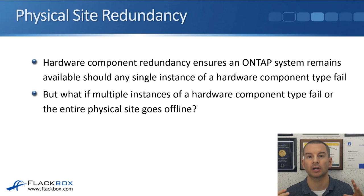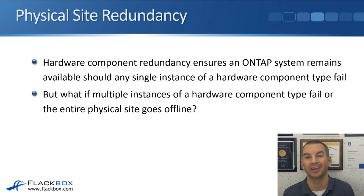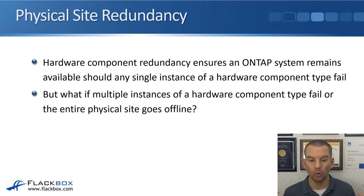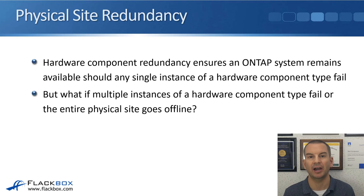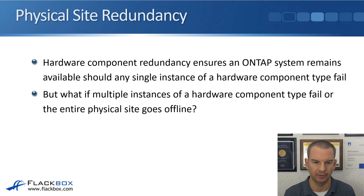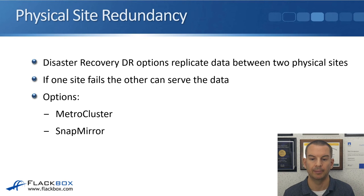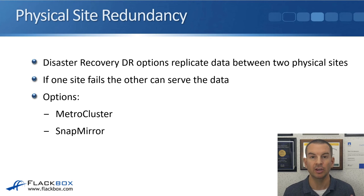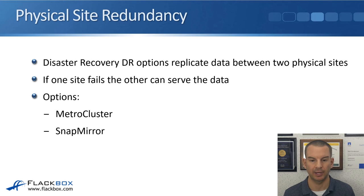Those were the hardware redundancies that protect against a single point of failure. Hardware component redundancy ensures that an ONTAP system remains available should any single instance of a hardware component type fail. But what if multiple instances of a hardware component type fail, or — somewhat more likely — the entire physical site goes offline because of a flood, fire, or complete electrical failure? We have solutions for that too. Disaster recovery (DR) options replicate data between two physical sites, so if one site goes down you still have the data in another site. The options for this are Metro Cluster and SnapMirror.